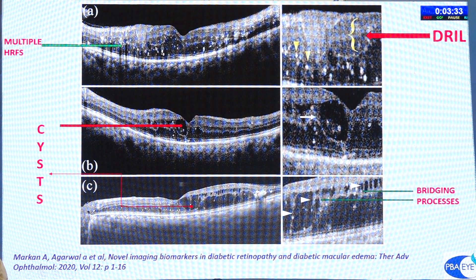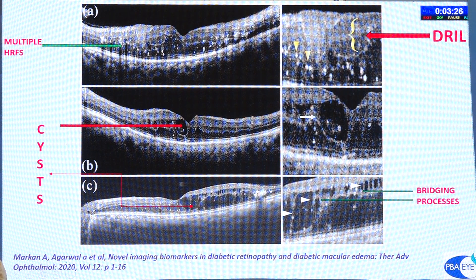In this photograph, multiple HRFs are visible. The yellow arrowheads indicate the HRFs; also shown are the cysts and bridging processes, as well as the DRIL extent.